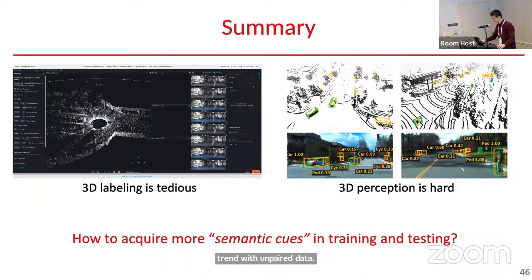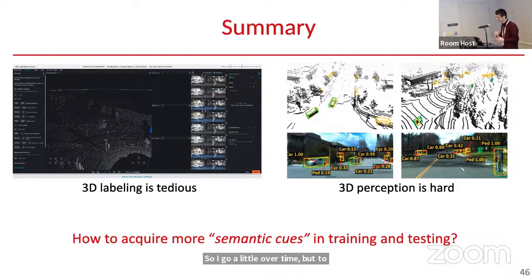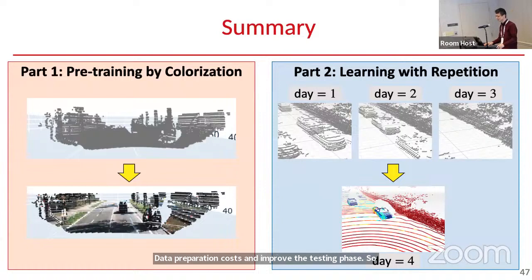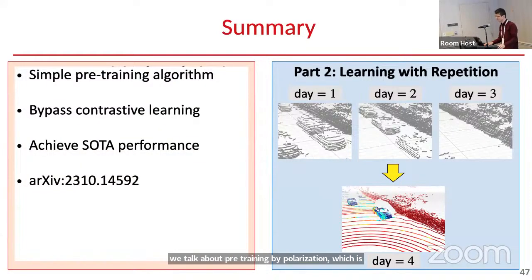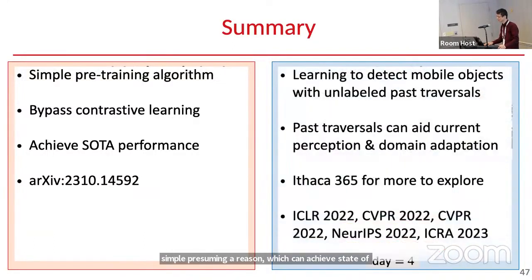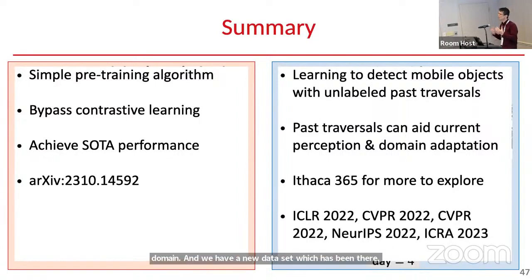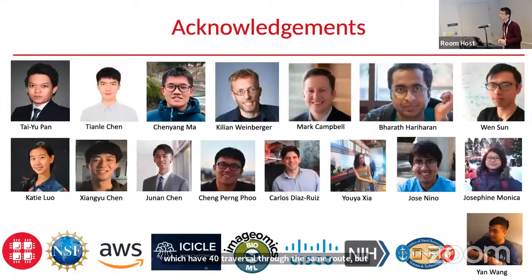To summarize: today I addressed the labeling challenge and inherent challenges in 3D perception — how to acquire extra semantic cues to lower training data preparation costs and improve the testing phase. We talked about pre-training by colorization: a simple pre-training algorithm achieving state-of-the-art results. And we talked about leveraging repetition in past traversal data to learn object detectors without labels, to aid current perception, and even for domain adaptation. We also introduced a new dataset with 40 traversals through the same route in different weather conditions, opening up exciting future research directions.